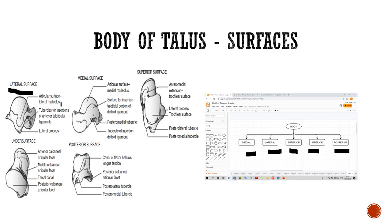Each surface articulates with an important structure. The lateral surface articulates with the lateral malleolus. The medial surface articulates with the medial malleolus. The superior surface articulates with the trochlear surface of the tibia. The inferior surface articulates with the calcaneus via articular facets. The posterior surface is not covered by any bone but has the posterior tubercle, which consists of posterior lateral and posterior medial parts.